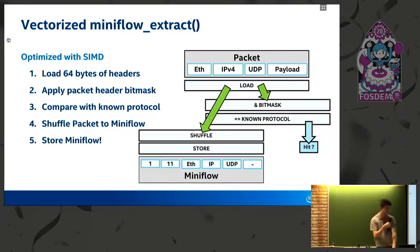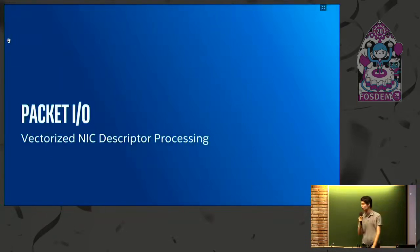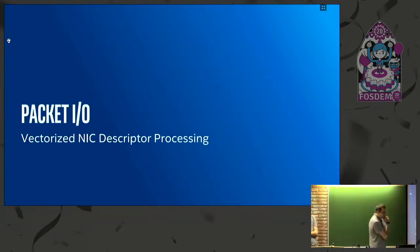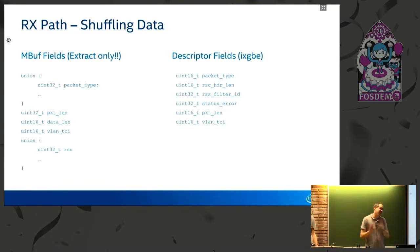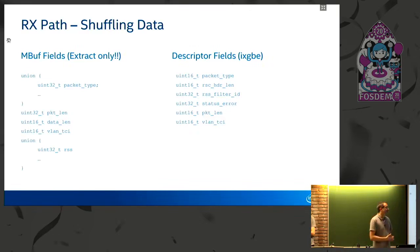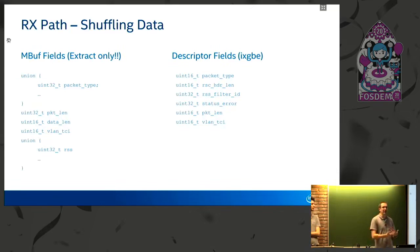We'll build on this mini flow and more vectorization in a subsequent part. But first I'll hand over to Bruce for packet IO. So I'm going to talk about some of our NIC PMD drivers in DPDK. Every PMD driver needs to take the metadata supplied by the network card and transform it into the metadata structure expected by the application — which is the mbuf, which you heard about in the last talk.